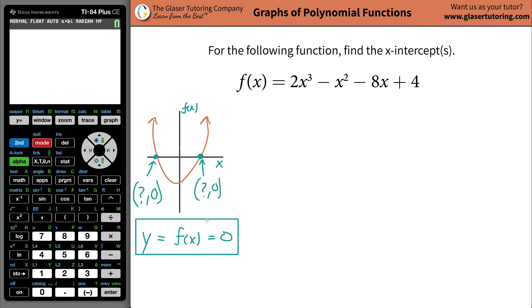Now what we're going to do is take the zero value and plug it in for f(x). Because that's what it means. So zero is going to be equal to 2x³ - x² - 8x + 4.